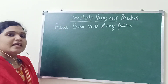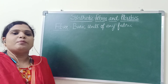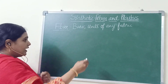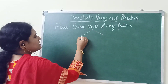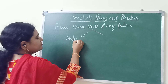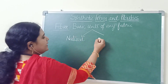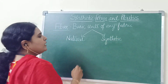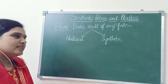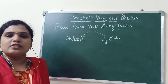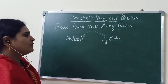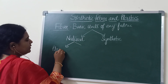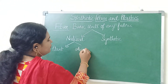Based on the origin — from where they are produced — fibers are classified into natural fibers and synthetic fibers. Natural fibers, as the name indicates, are derived from natural sources like plants or animals. So, natural fibers are again divided into plant fibers and animal fibers.